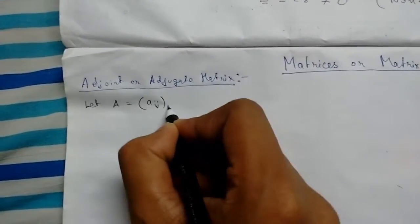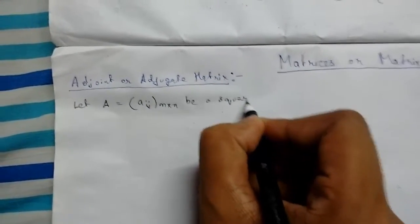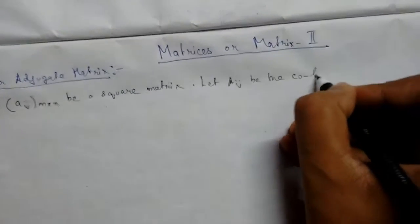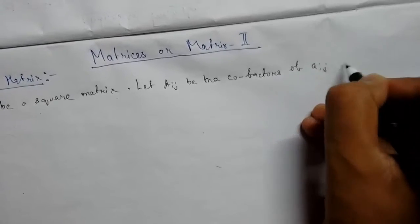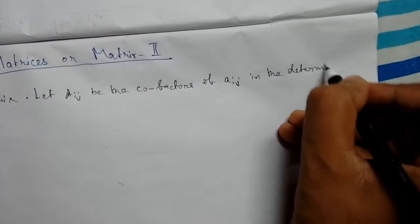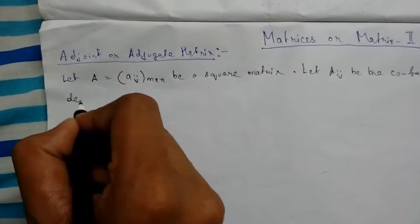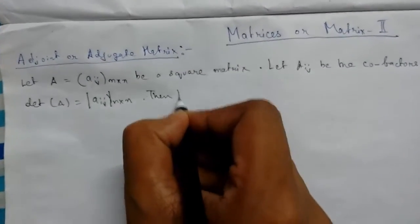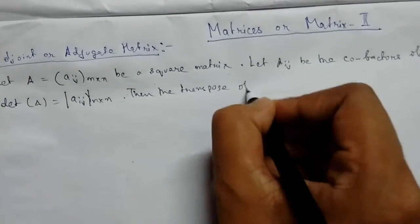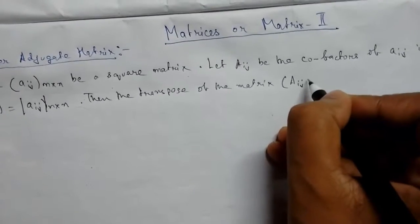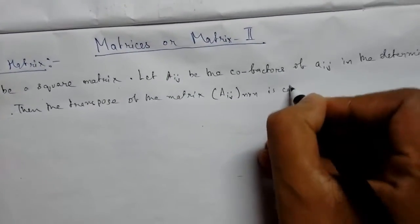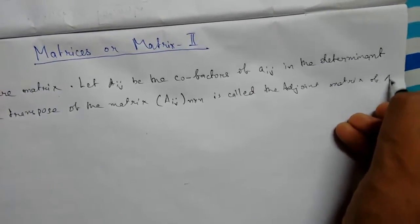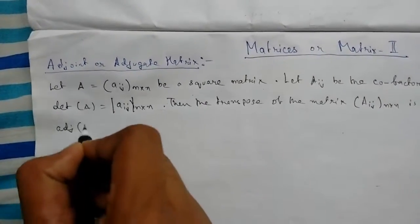Let A, with elements a_ij of order n×n, be a square matrix. Let A_ij be the cofactors of elements a_ij in the determinant det(A). Then the transpose of the matrix of cofactors, written as [A_ij] n×n transposed, is called the adjoint of matrix A, denoted by adj(A).